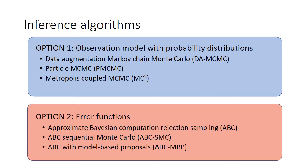In approximate Bayesian computation, or ABC for short, we assume that the observation model is non-zero only when the error function is below some specified threshold value, here denoted by EF cutoff. Based on the two approaches for the observation model, different sets of inference algorithms have been developed. Under option one, with the full probability distributions, we have data augmentation Markov chain Monte Carlo, particle MCMC, and Metropolis-Hastings MCMC, among others. Under option two, which uses an error function, we have ABC rejection sampling, ABC SMC, and the new ABC MBP approach I'll discuss later.